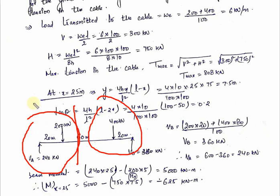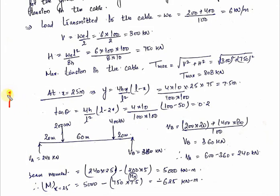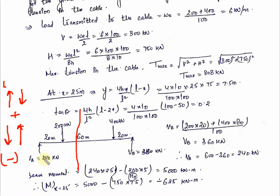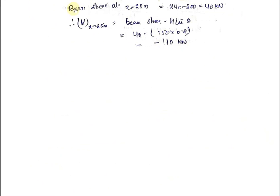Taking the left part of the section, using the sign convention where upward left force is positive and downward left force is negative: VA = 240 kN (upward, positive) and 200 kN (downward, negative). So beam shear = 240 − 200 = 40 kN. Therefore, shear force at x = 25 meters = beam shear − H × tan θ = 40 − 750 × 0.2 = 40 − 150 = −110 kN.